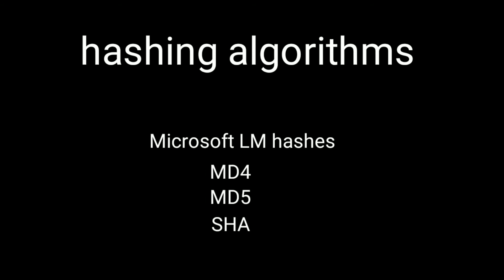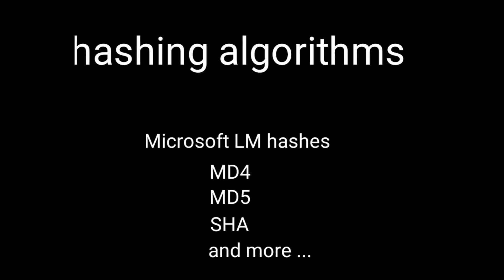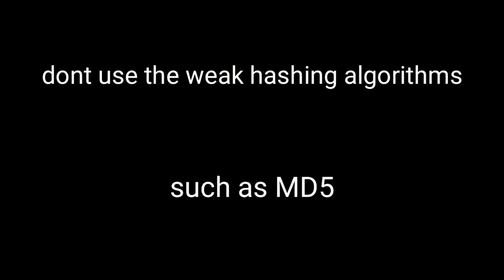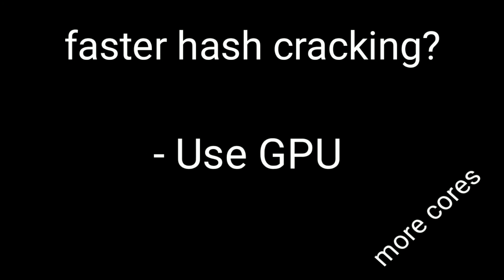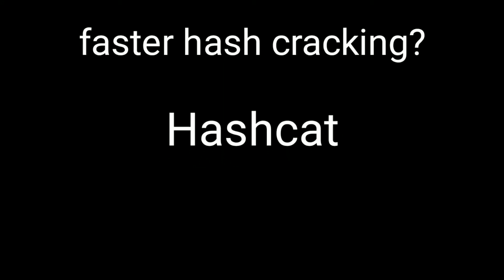There are actually various types of hashing algorithms out there, such as Microsoft LM hashes, MD4, MD5, SHA1, and much more. The best tip I can give is: don't use weak hash algorithms such as MD5 or SHA1, because they are not secure and anyone can crack those hashes. If you really want faster hash cracking, you should use a GPU because it processes hashes much faster and has the quality of parallel task optimization.